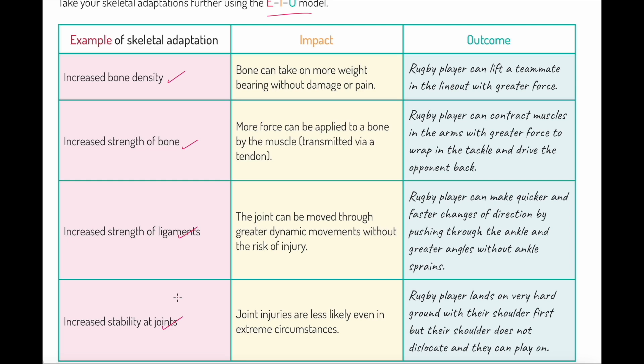What, for example, is the impact of increased bone density? Increased bone density means the bone can take on more weight bearing without damage or pain. What's the outcome of that for a rugby player? A rugby player can lift a teammate in the line out with greater force without damage. Can you see how I've taken my example of adaptation, its impact is more weight bearing, its outcome is that we perform better in rugby line outs?